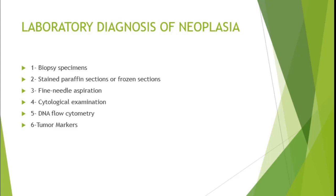Laboratory diagnosis of neoplasia: the primary method is biopsy — examined as a stained permanent section or frozen section. Fine needle aspiration (FNA) is used for superficial lesions like thyroid or breast nodules. Cytological examination is performed on body fluids by centrifugation, collecting the precipitate and spreading it on a glass slide. DNA flow cytometry assesses ploidy.